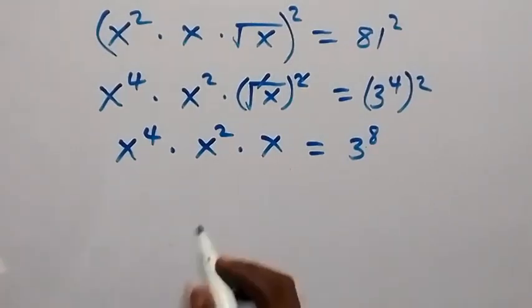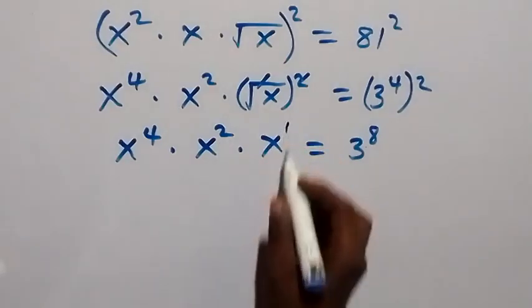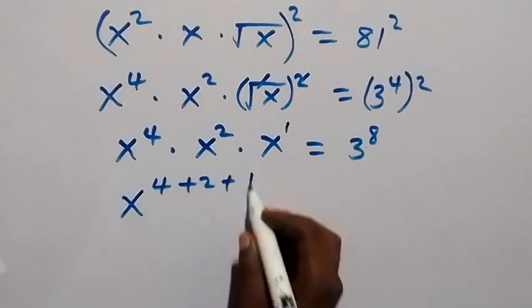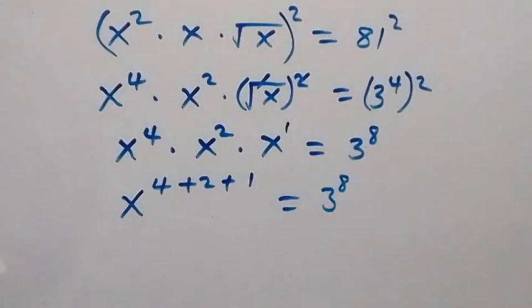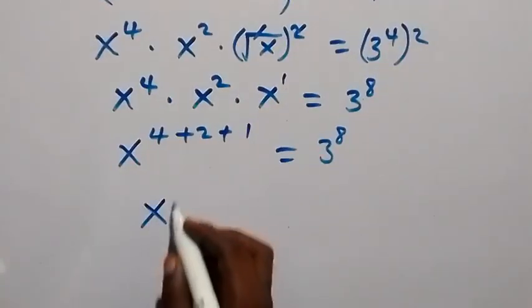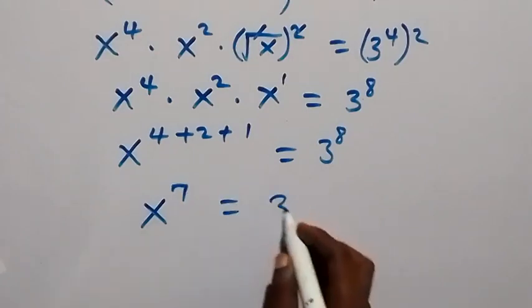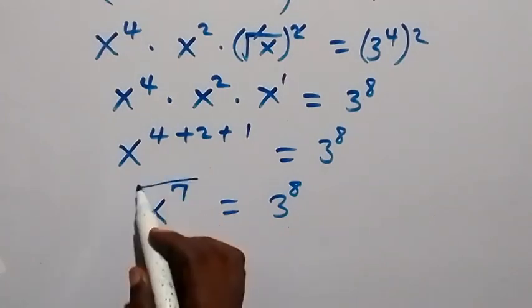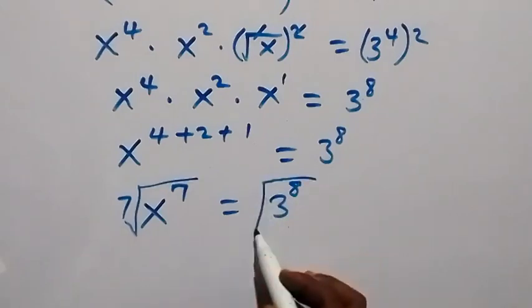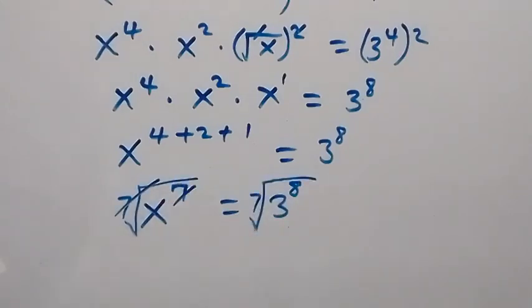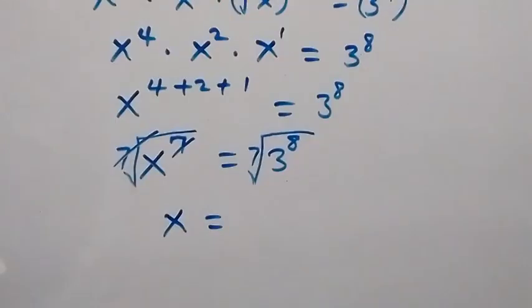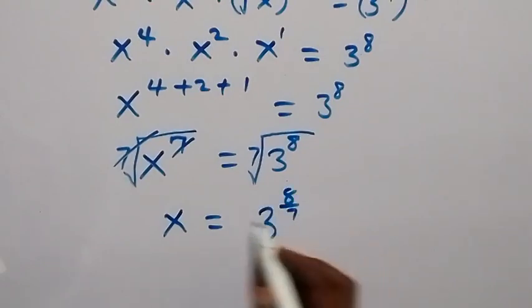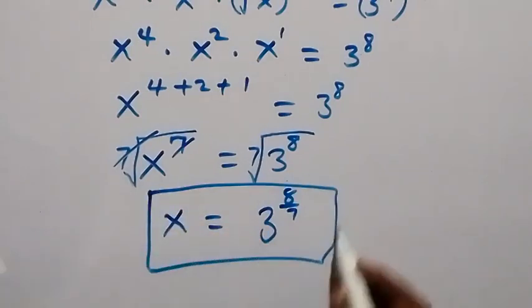By the law of indices, since we have the same base we can add the powers: 4 plus 2 plus 1 equals 7. So x to the power 7 equals 3 to the power 8. To solve for x, we take the 7th root on both sides, giving x equals 3 to the power 8 over 7.